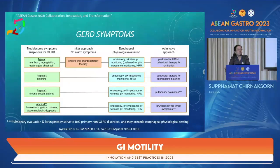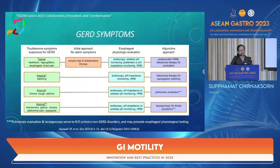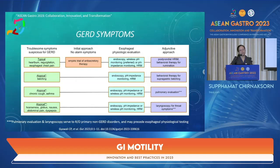If a patient presents with troublesome symptoms suspicious for GERD — specifically heartburn, regurgitation, or esophageal chest pain — without alarming features, empirical PPI therapy can be used. However, if the patient presents with atypical symptoms such as belching, chronic cough, asthma, hoarseness, nausea, abdominal pain, or dyspepsia without typical reflux symptoms, further esophageal physiology evaluation is required before diagnosis and treatment.